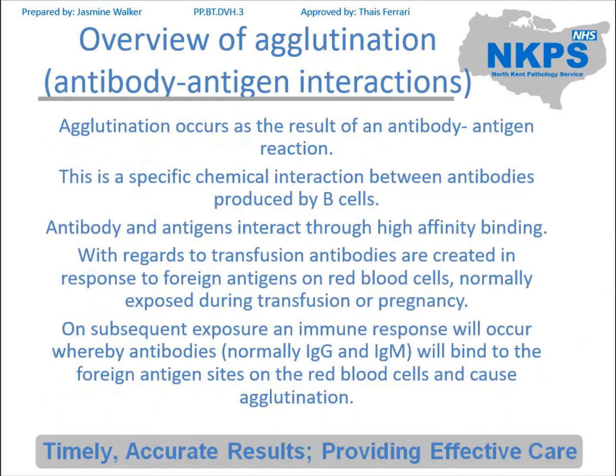Starting with an overview of agglutination. Agglutination occurs as a result of an antibody-antigen reaction. This is a specific chemical interaction between antibodies produced by B cells. In relation to transfusion, each person has specific antigens on their red blood cells. When they are exposed to red blood cells from a foreign entity — via transfusion or through pregnancy — they create antibodies that correspond to these antigens.